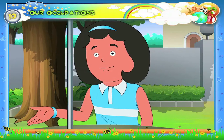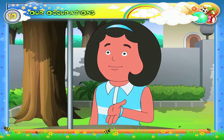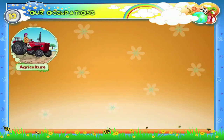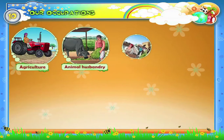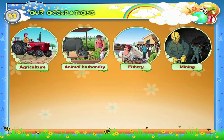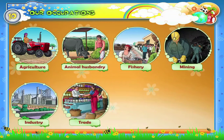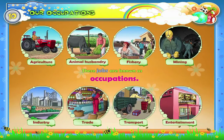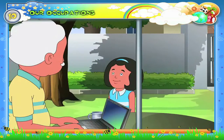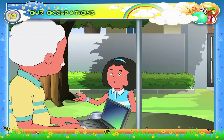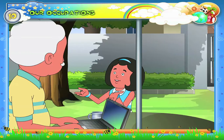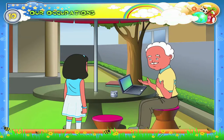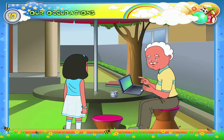What are the different jobs done by the people? People do different jobs like agriculture, animal husbandry, fishery, mining, industry, trade, transport, entertainment etc. These jobs are known as occupations. Dadaji, will you tell me more about occupations? Surely, I have all such pictures on my laptop about occupations. Let's take a look at them.